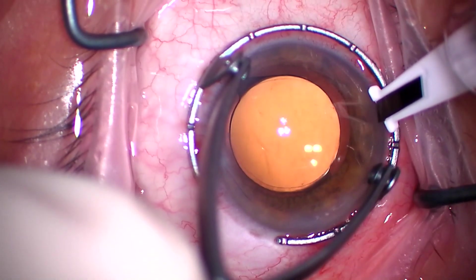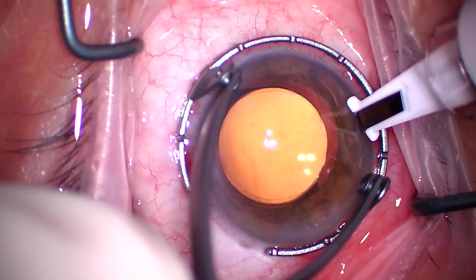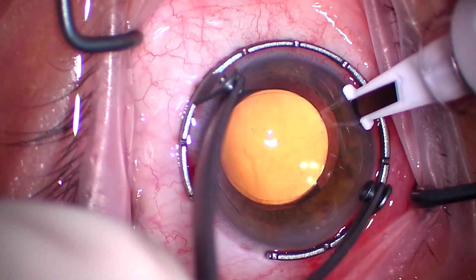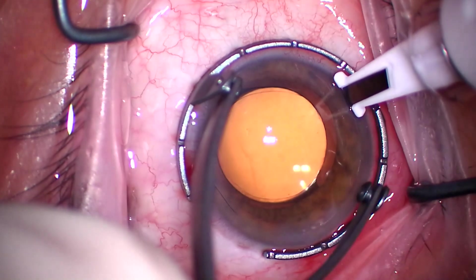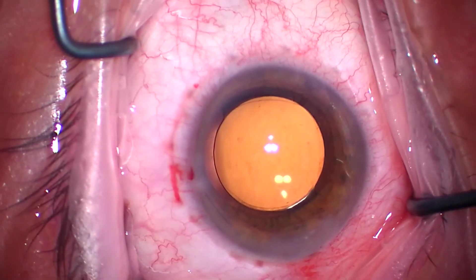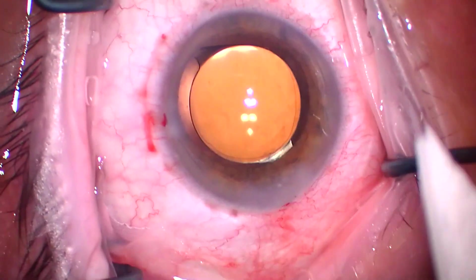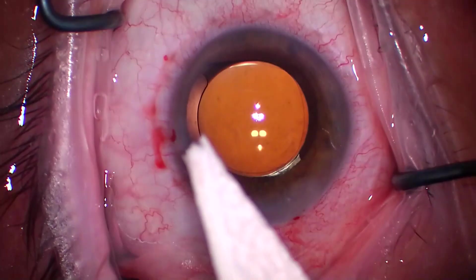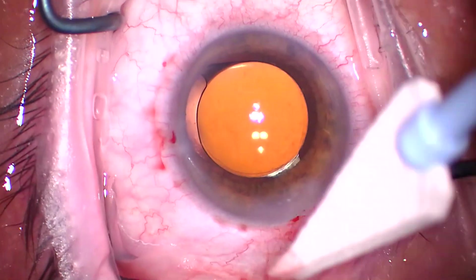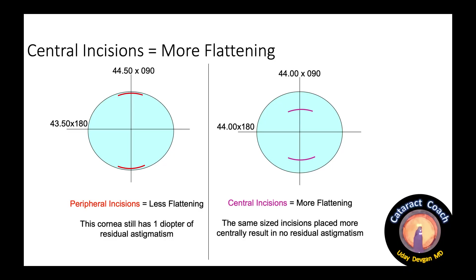There it is. We'll make a simple arc here of about 30 degrees — blade all the way perpendicular to the cornea, and there's the arc. So these two together, in this case, are going to cause about 0.75 diopters of flattening at that meridian. We just double-check to make sure they're watertight.